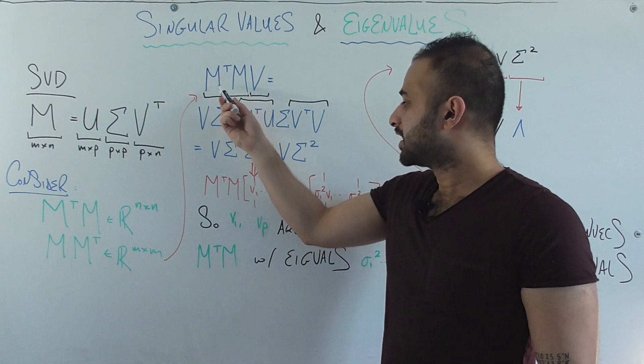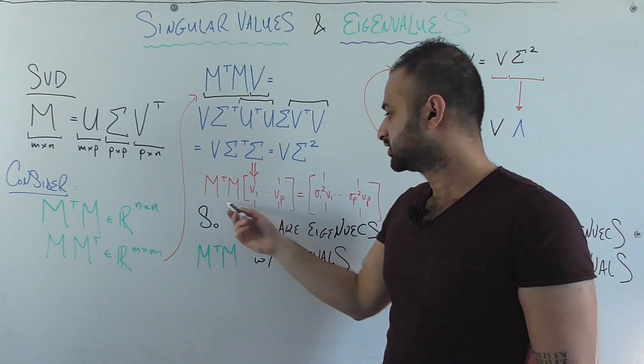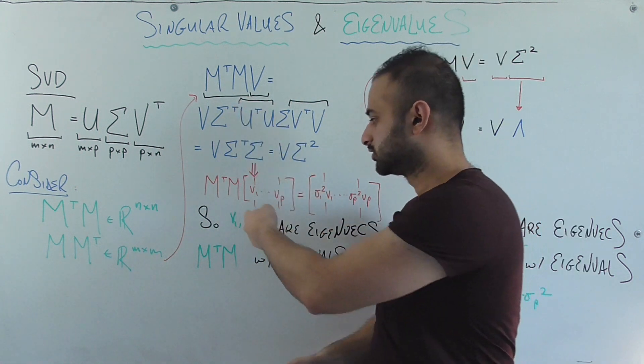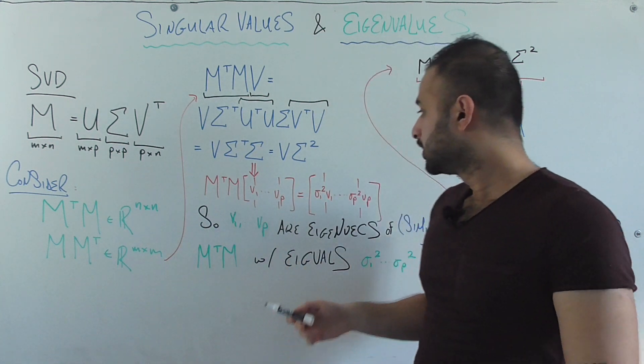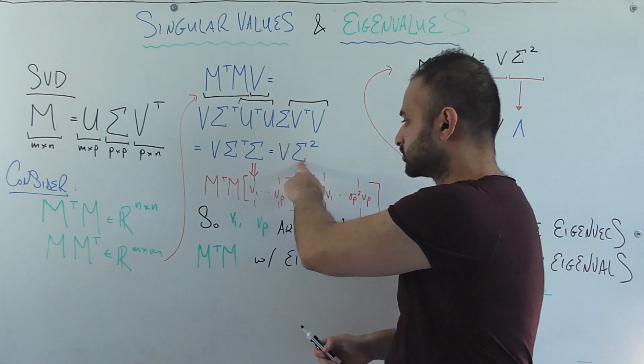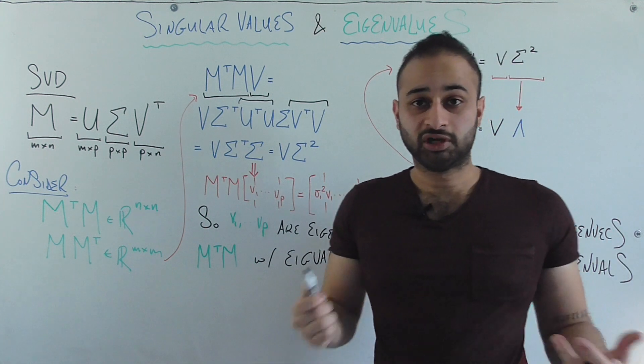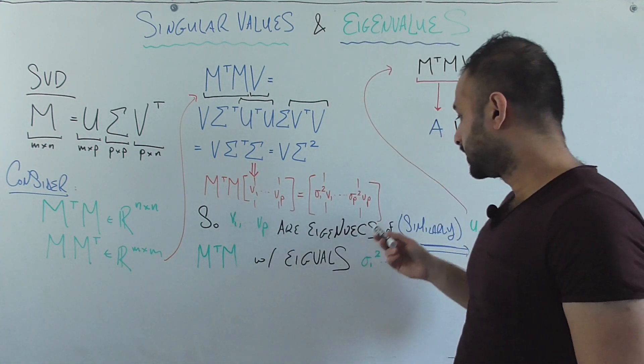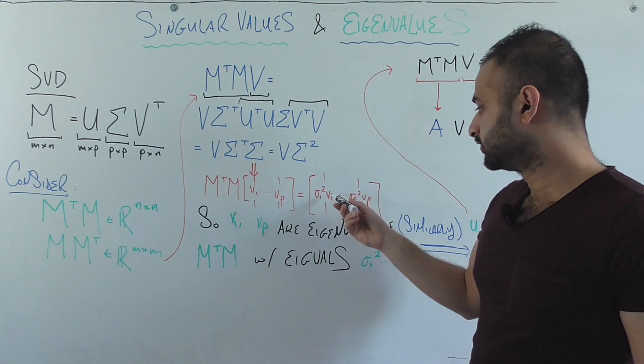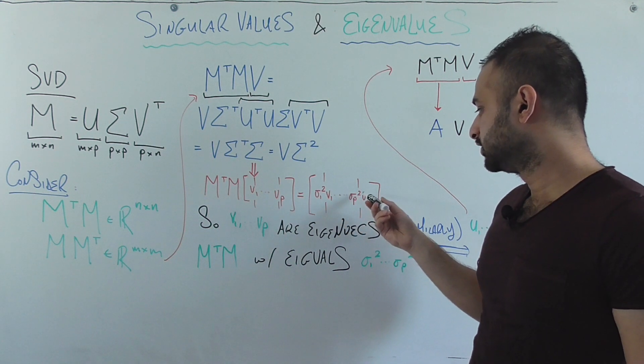So we see we have M transpose M times V. This was the original thing that we had written up here, just with the V matrix now written in its full form with all of its P vectors. And what we have on this side, basically if we were to take this sigma squared, which is a diagonal matrix where you square each of the singular values on the diagonal, then we can write it in this form. So sigma one squared V one all the way to sigma P squared VP.